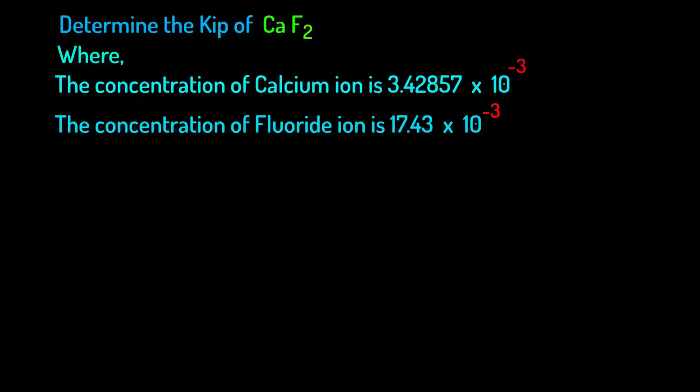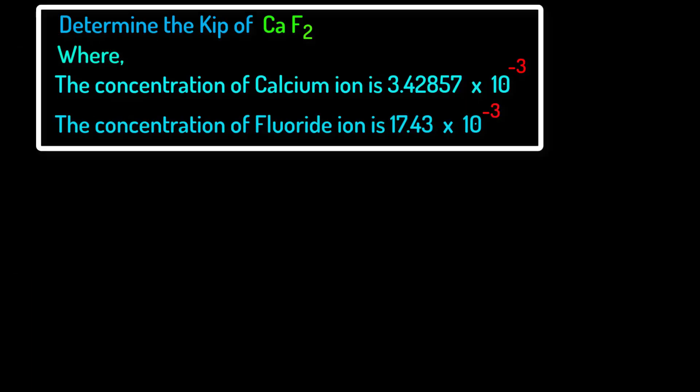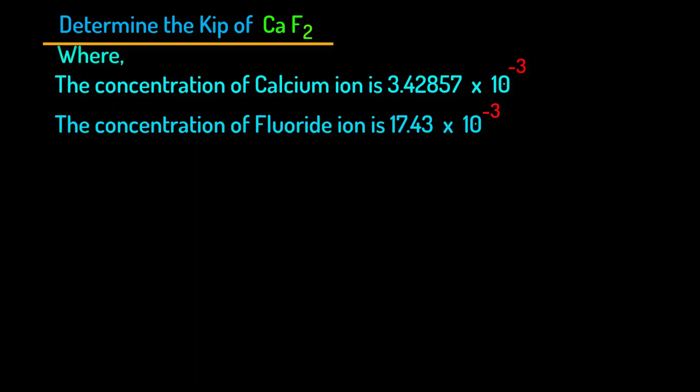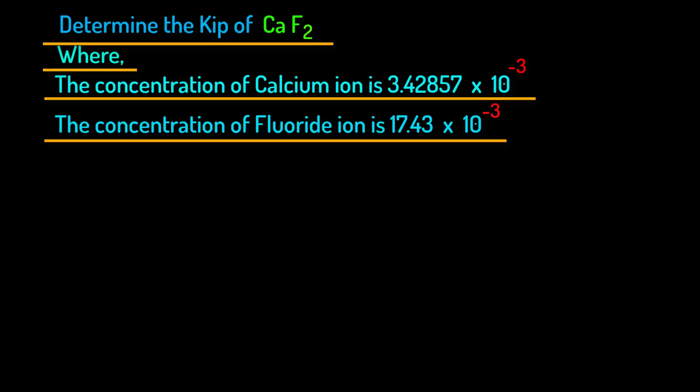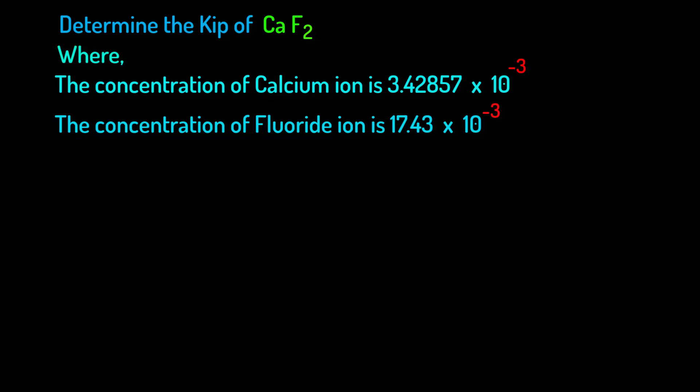For better understanding we will solve this problem now. Determine the Kip of calcium fluoride where the concentration of calcium ion is 3.42857 times 10 inverse 3 and the concentration of fluoride ion is 17.43 times 10 inverse 3. For calculating this calcium fluoride salt what will be our first step?